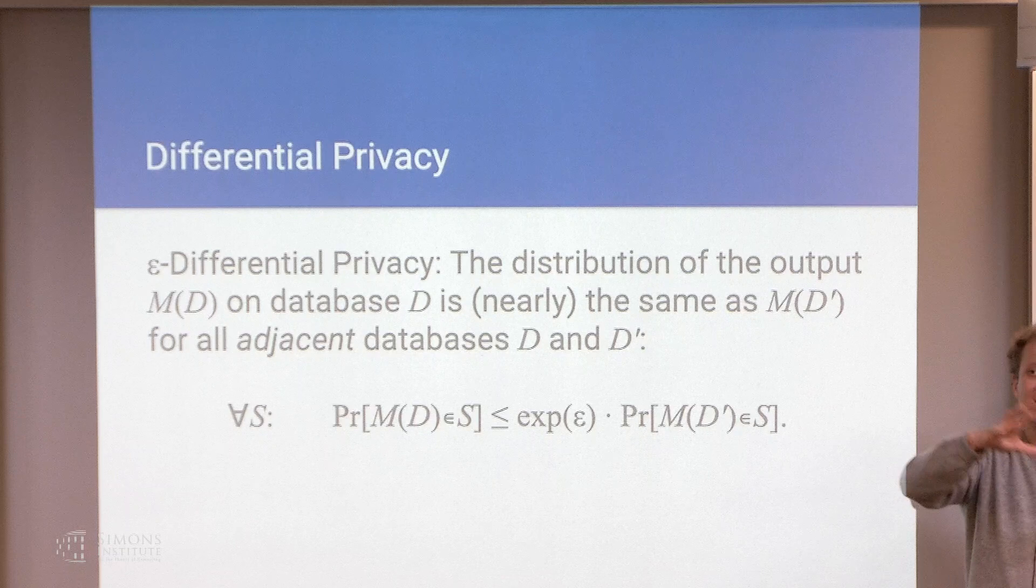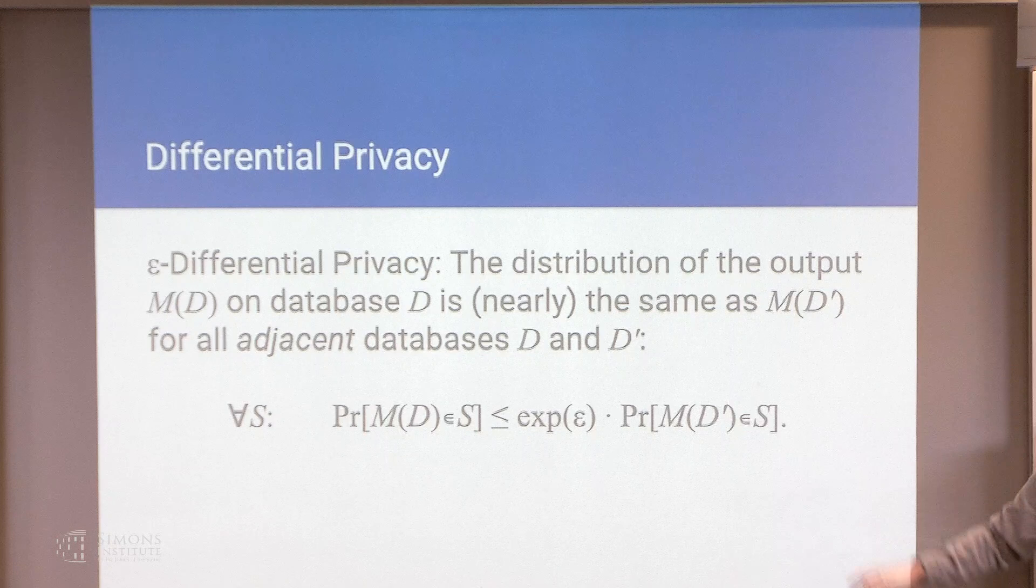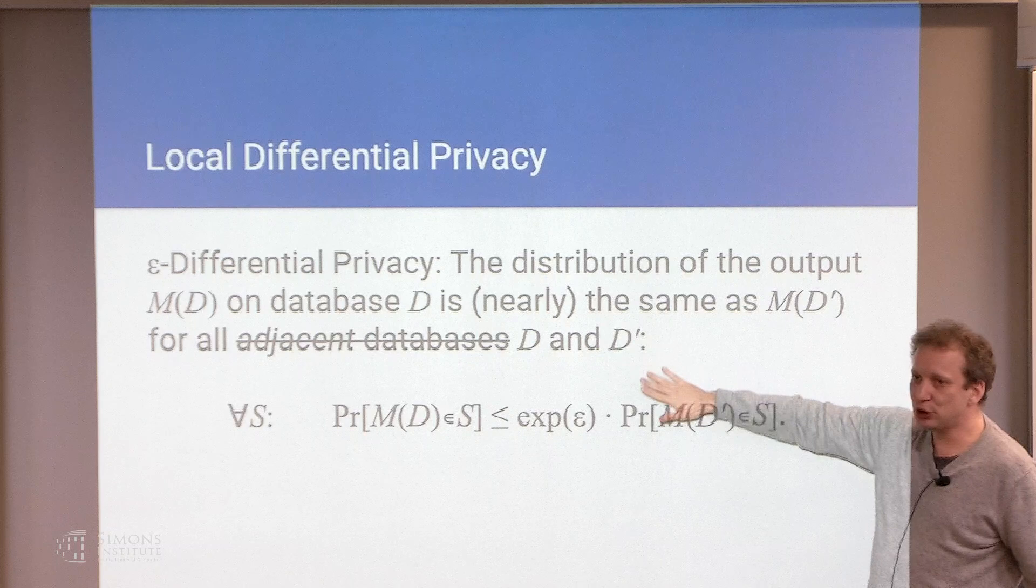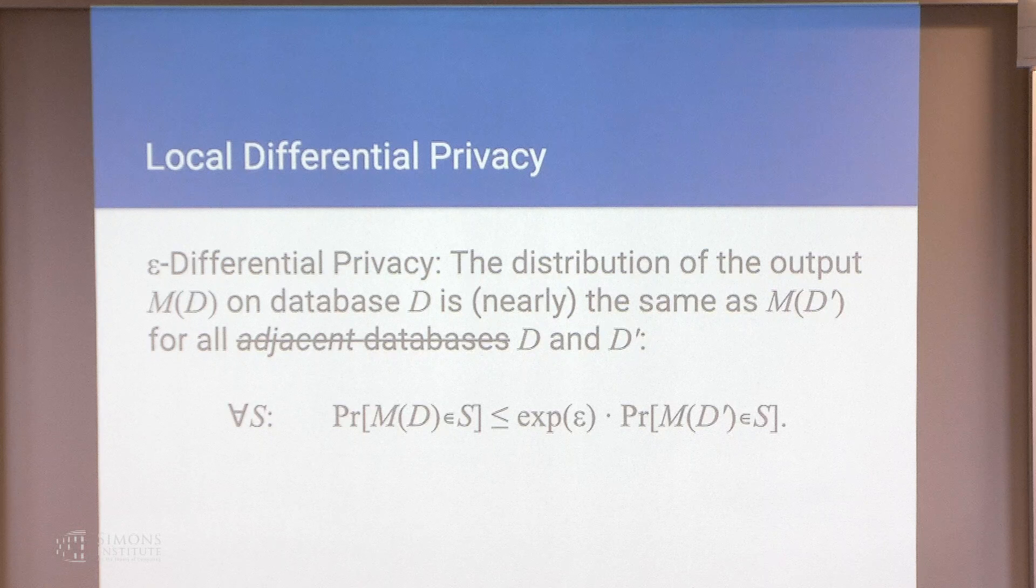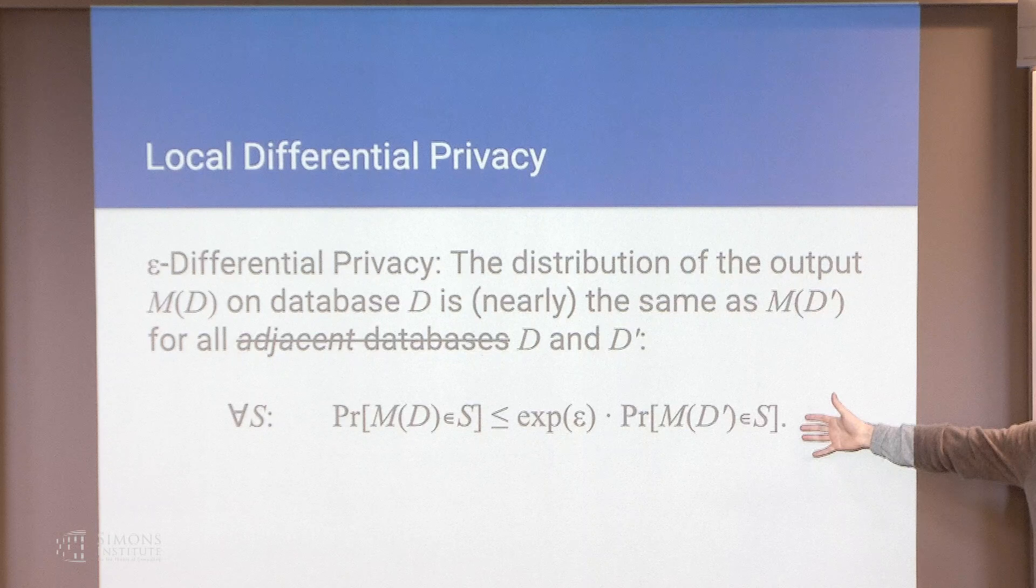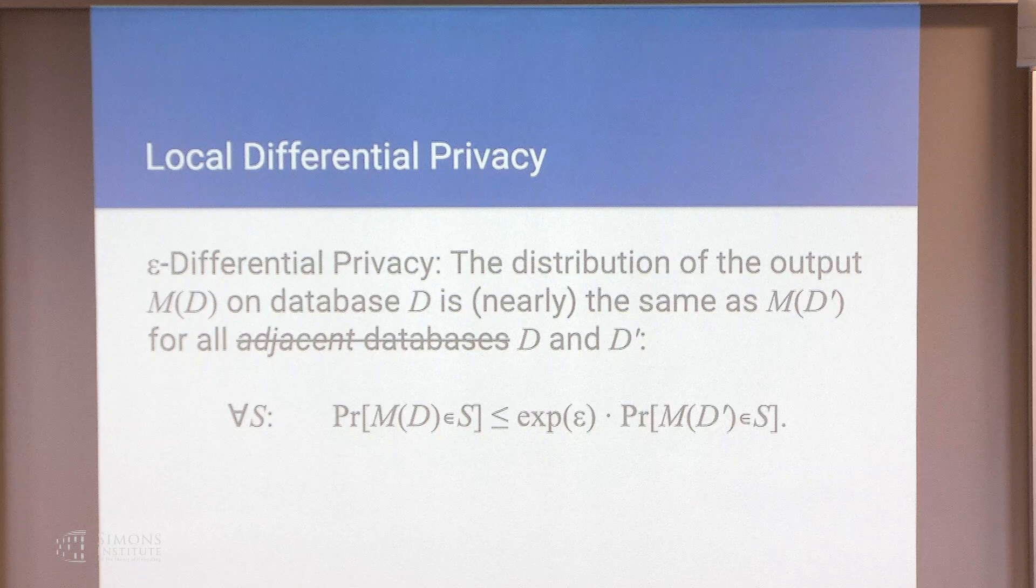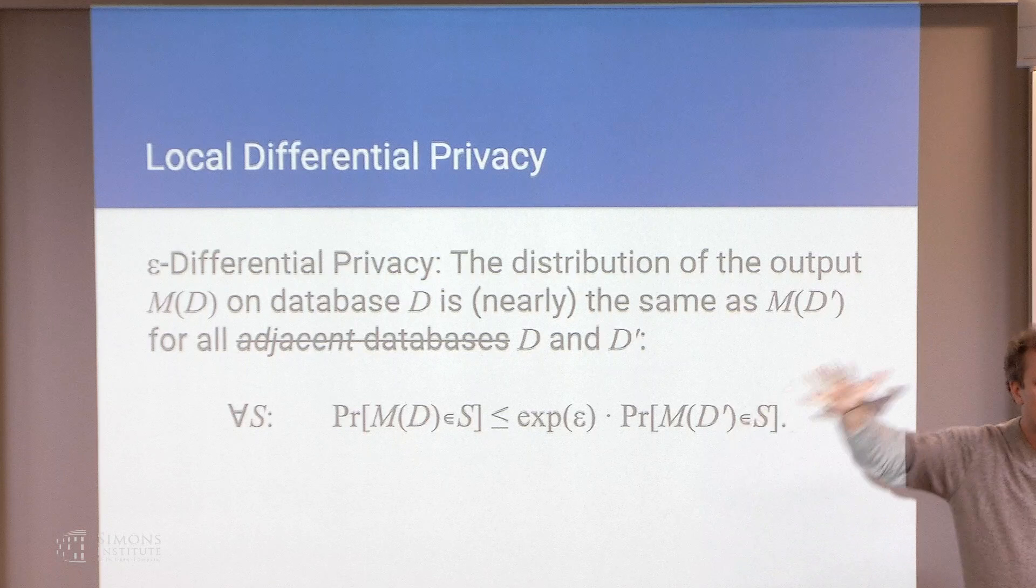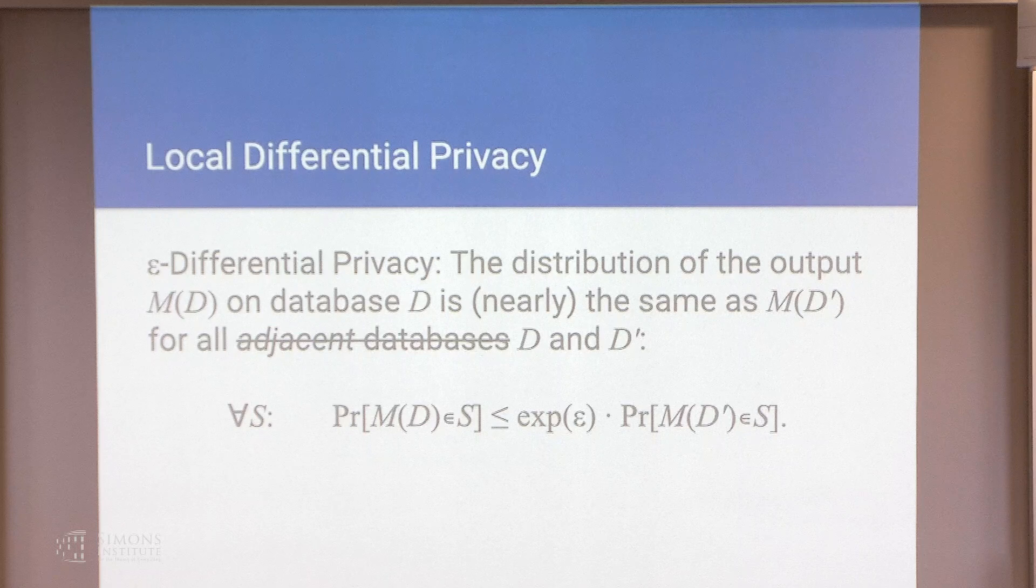And local differential privacy takes it to the 11th. So we want the distribution of the transcripts be close for all possible inputs. Of course, under this definition, we won't be able to do much, but you have to realize that as the definition applies to each individual record, all together, across all the records, we are able to learn something non-trivial about the world. And this is what this part of our tutorial is going to be about.